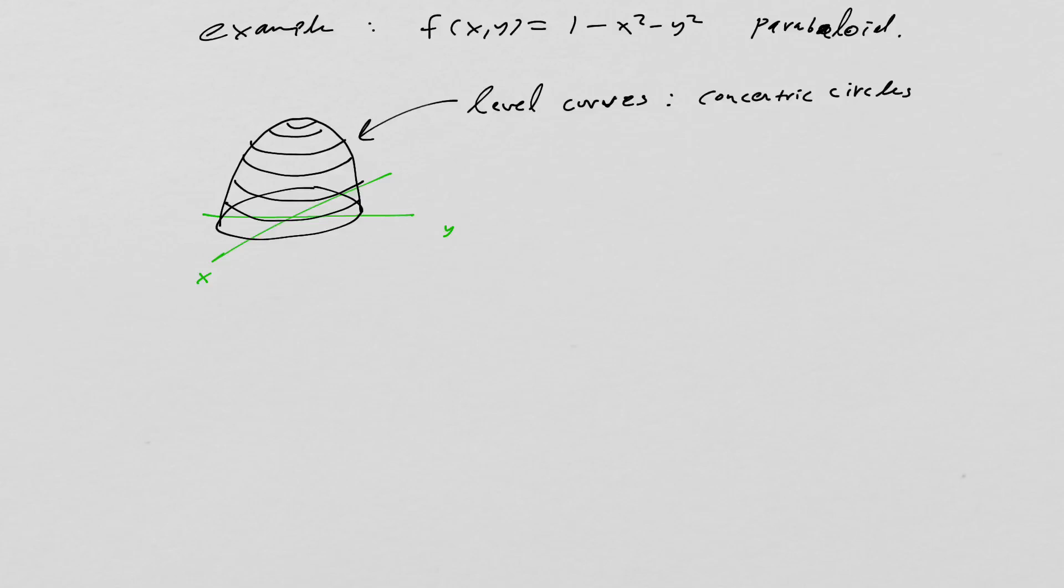So what I want to do is we're going to examine a point. We're going to look at the point square root of 2 over 2, root 2 over 2. So that point is going to be right there on the x,y plane. And let's see if we can compute grad f.